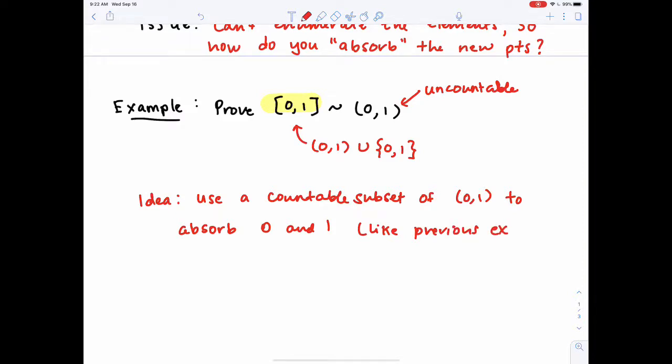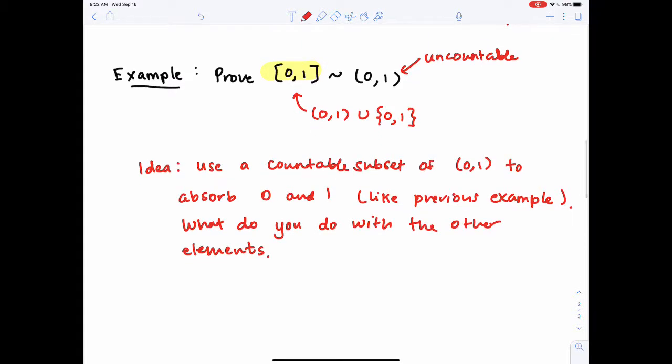So here's the idea of how we're going to approach this problem. Use a countable subset of (0,1) to absorb 0 and 1, the new points, like the previous example. So here 0 and 1 are playing the role of x₁ and x₂ from our previous example. But then that begs the question, what do you do with the other elements? Because if I only deal with a countable subset of the open interval from 0 to 1, then there's going to be a whole bunch of elements that aren't part of that subset that also need to be mapped somewhere. So the first thing here is, let's worry about what we do with the other elements later. For now, let's just think about how can I get a countable subset of the open interval (0,1).